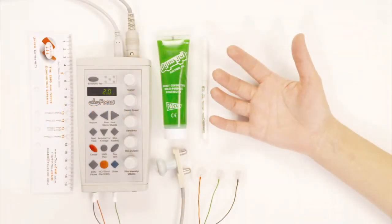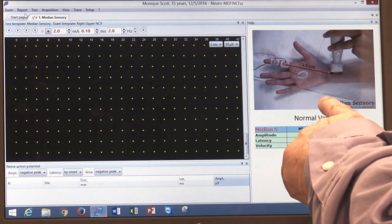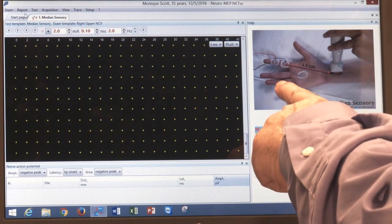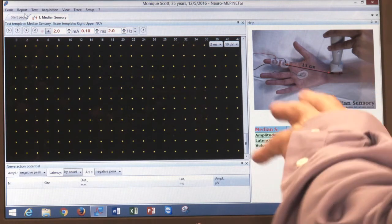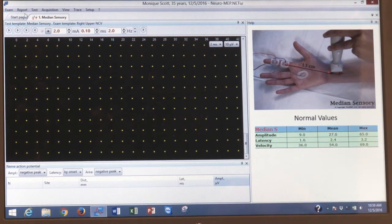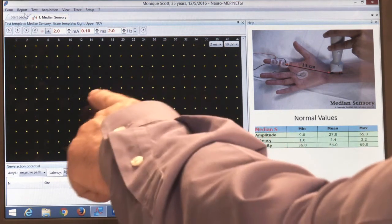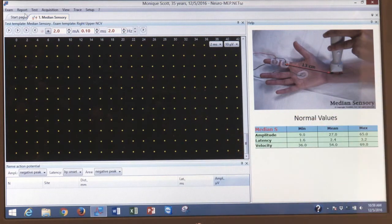So let's get started. The first nerve we're going to study is the median sensory, and you see here a picture of the setup of the median nerve. It shows you where we place the electrodes and it shows you where we actually stimulate the nerve at the wrist here. Below that, you see also some expected normal values that we would compare the potential that we get from the patient and compare it to the normal values that we have on the screen here.